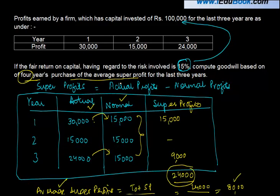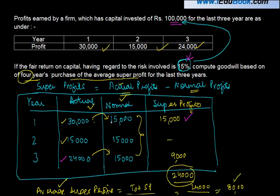To repeat the steps: super profits are calculated by reducing normal profits from actual profits. Actual profits for 3 years were 30,000, 15,000 and 24,000. Normal capital employed was 1 lakh on which 15% is the expected rate of return, so 15,000 for each year. Subtracting normal from actual gives super profits of 15,000, 0 and 9,000.